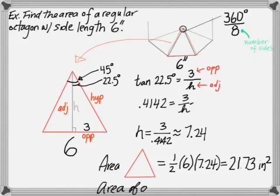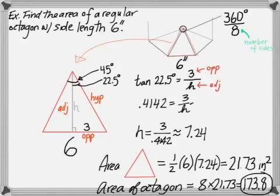And then, of course, the octagon is 8 of those triangles. Going back to this picture up here. 8 of those triangles going around. So, 8 times 21.73 is 173.8 square inches. So, that's that example.